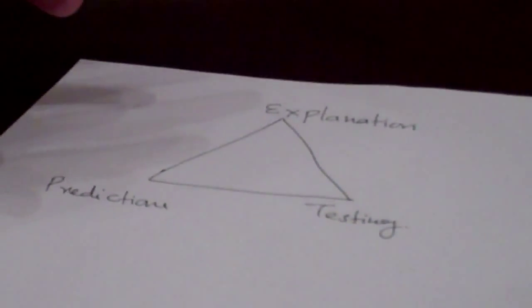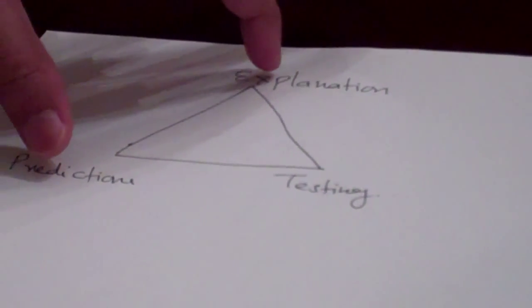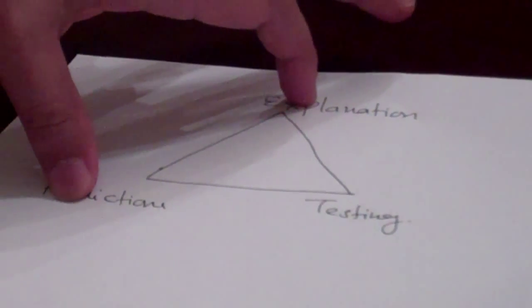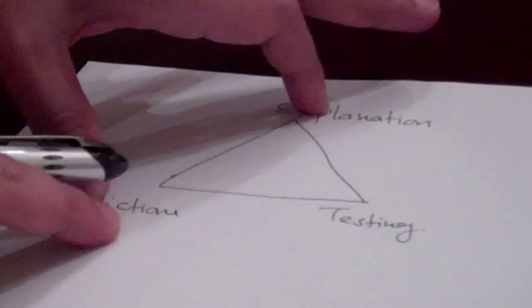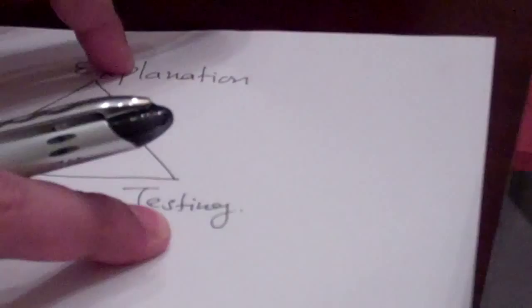At any given point, based on our background assumptions, we may feel confident about two corners and then we use them in our investigation to learn more about the third corner point.